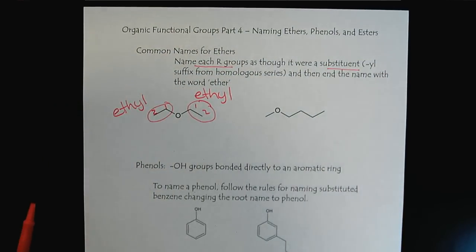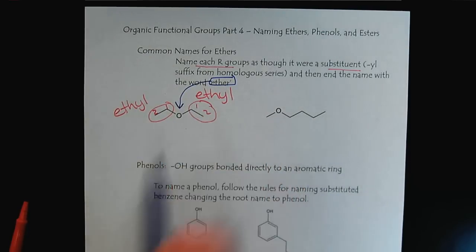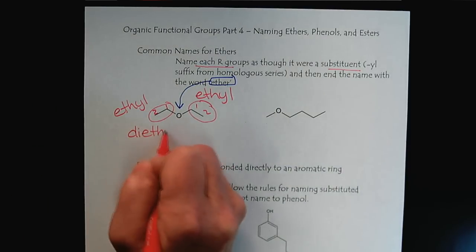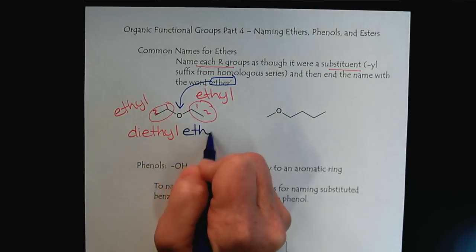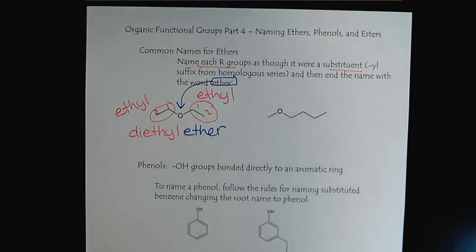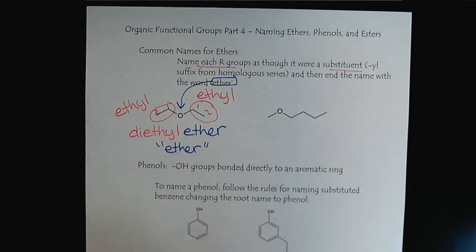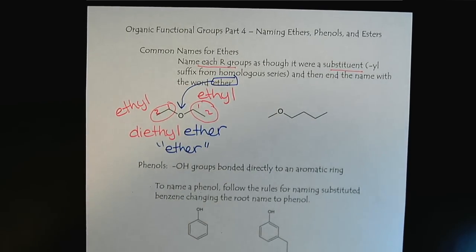And then we simply end the name with the word ether to let everybody know. So for example this would be diethyl ether. This is one of the most common ethers and so it's frequently just simply called ether. So if you're ever reading something and it describes ether, most likely it's diethyl ether.